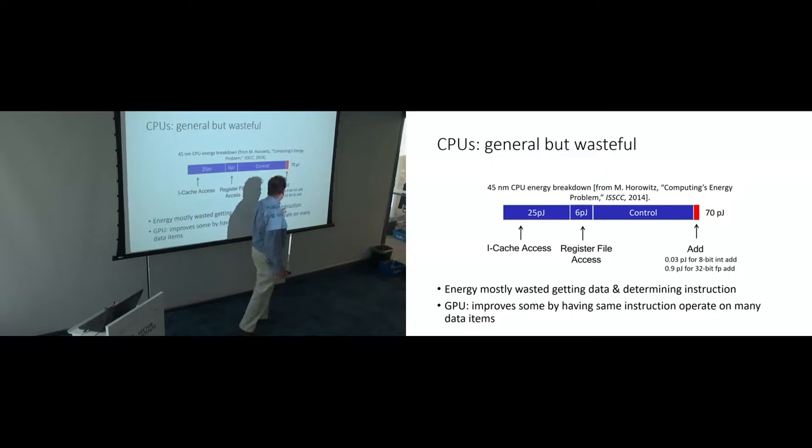So the actual operation you wanted to do in this case was three one hundredths of a picojoule for an 8-bit add. So very small compared to the energy we just spent. And even for a 32-bit floating point add, which is a lot more complicated than an 8-bit integer add, it's only 0.9 picojoules. So one and a half percent of the total power actually went to the computation we wanted. For an 8-bit add, it's far under 1%. So very wasteful.